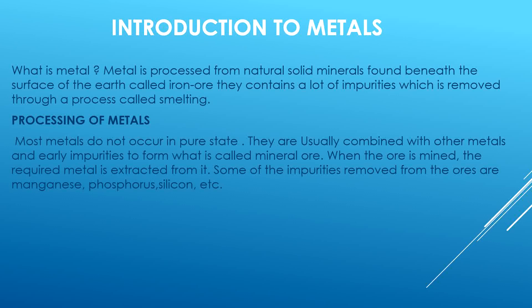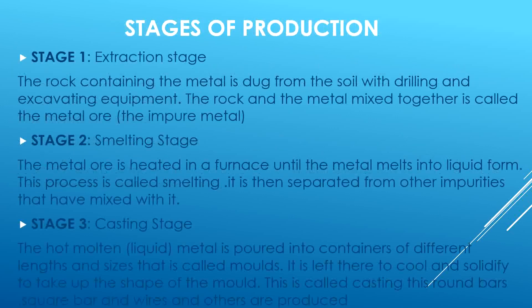When the ore is mined, the required metal is extracted from it. Some of the impurities removed from the ore are magnesium, phosphorous, silicon, and so on. The stages in the processing of metal are: one, the extraction stage — this is the part where the rocks containing the metals are dug from the soil with drilling and excavating equipment.